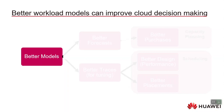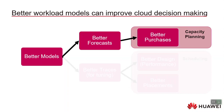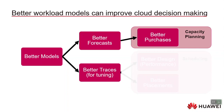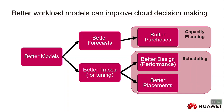Better workload models can improve cloud decision making. With a better model, you can generate better forecasts of future workload and make better purchasing decisions, ensuring you don't have too much or too little capacity. But also, if you have a generative model that can create traces, you can have better scheduler design, optimizing latency and minimizing resources needed, and also optimize placement algorithms to reduce fragmentation.